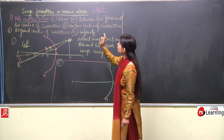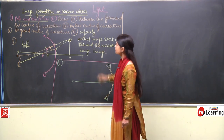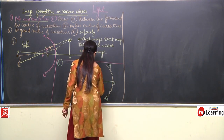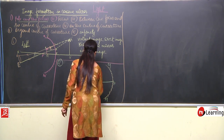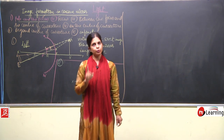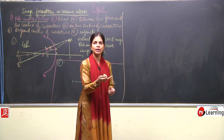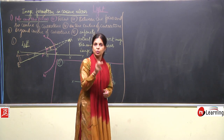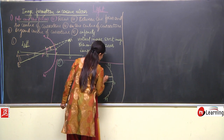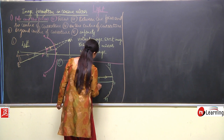Now, in the second position, we are supposed to keep the object at the focus. So center of curvature is there and at the focus I have kept the object. Again we will talk about only two rays. One ray will be parallel to the principal axis — a ray of light moving towards this side. You may call this object A B.